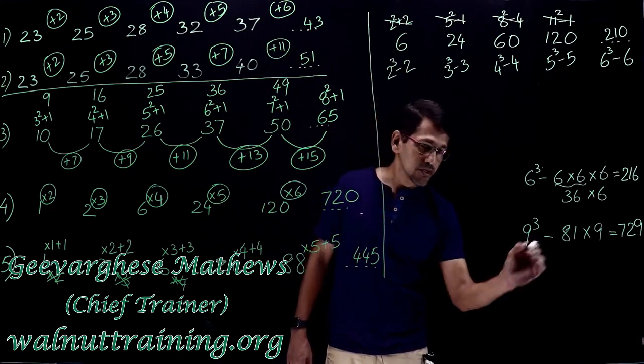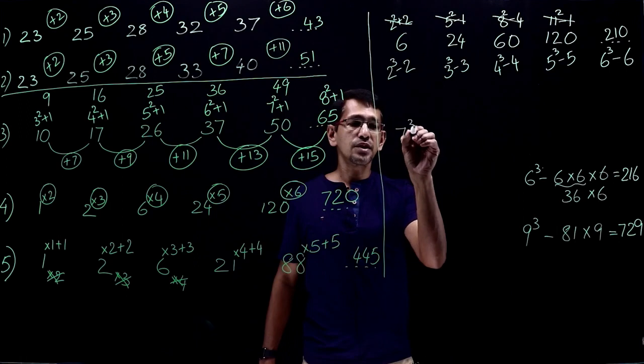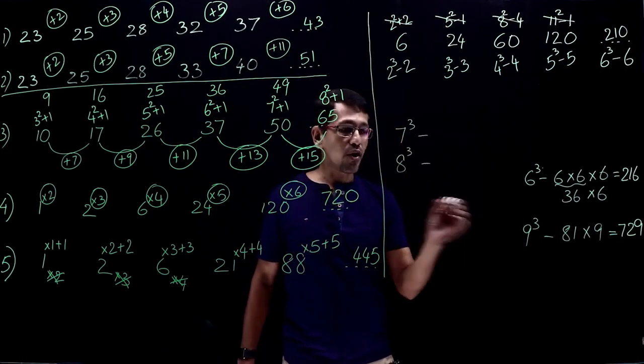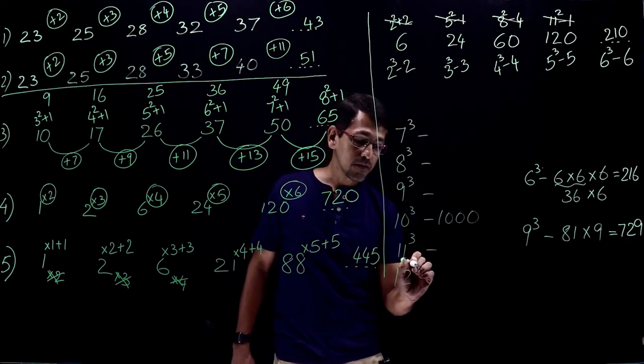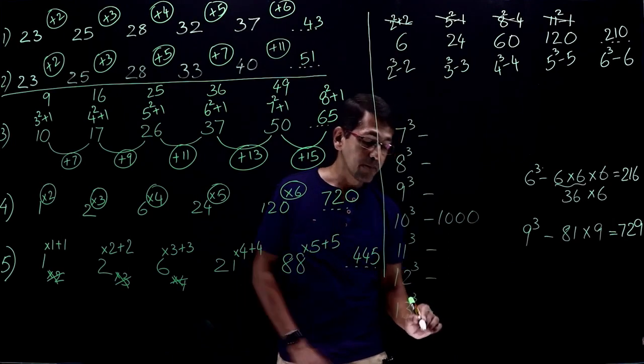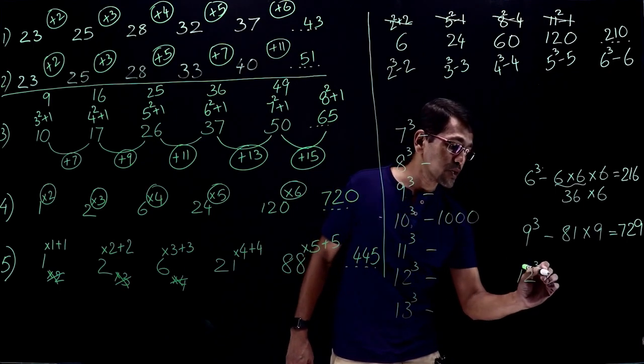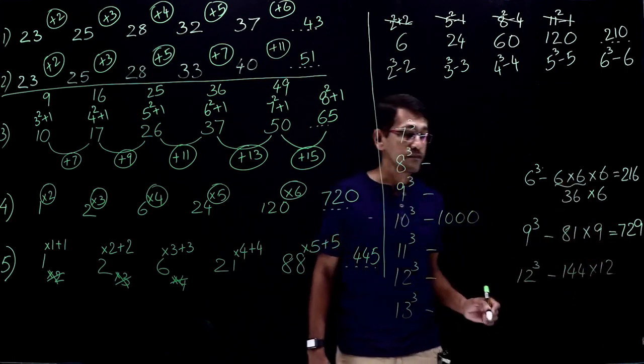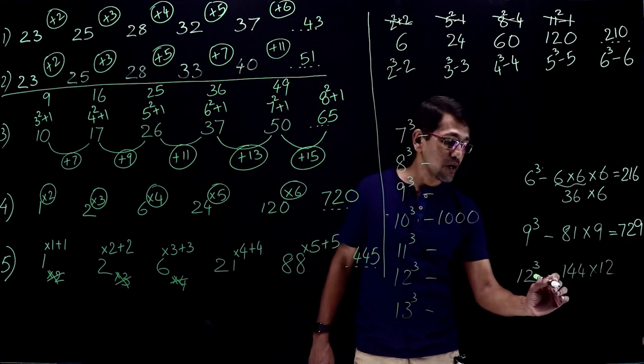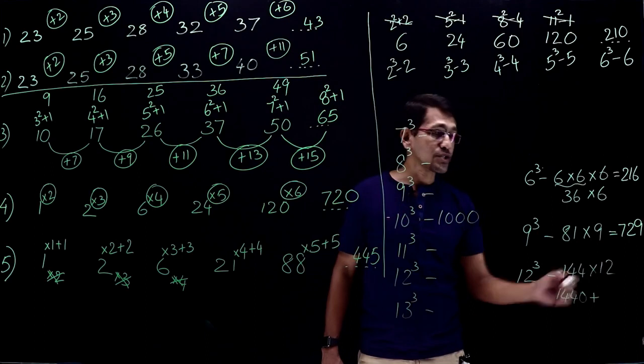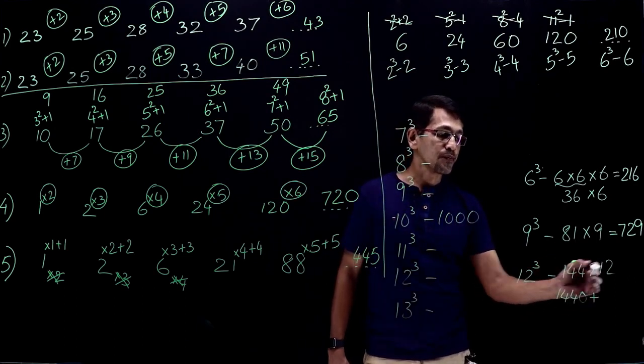How about we try 12 cube? I'm just taking some random numbers, but what I want you to do, find out the cubes of numbers. We have already 6 cube here, 7 cube onwards. So 12 cube is 12 square, 144 into 12. So what I do is 144 into 10 first. So that is easy, 1440, plus the balance is 144 into 2. Already we have taken that 10 from 12, so 144 into 10 is 1440, the balance is 2.